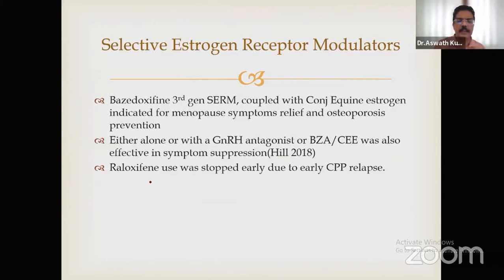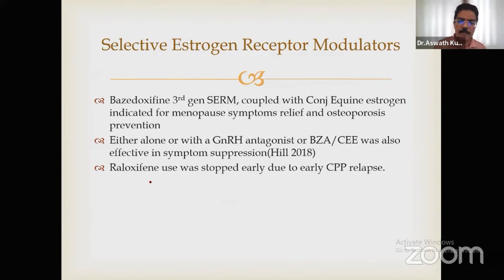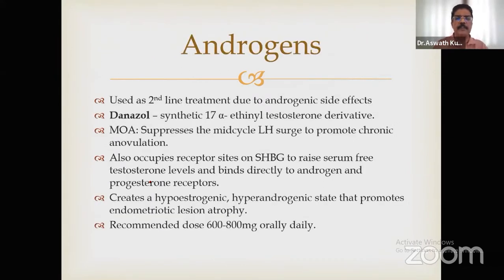Bazedoxifene is a third-generation SERM coupled with conjugated equine estrogen, indicated for postmenopausal syndrome and osteoporosis prevention. It can be used alone or with GnRH in endometriosis for symptom relief. Raloxifene was initially tried but found to be non-effective because when it was stopped, chronic pelvic pain immediately returned.